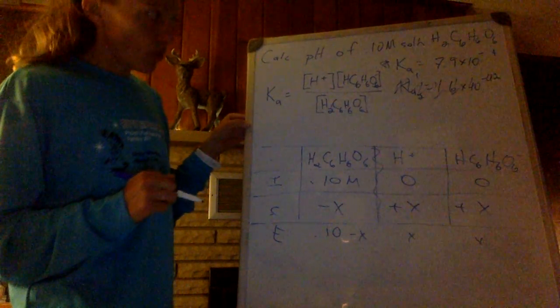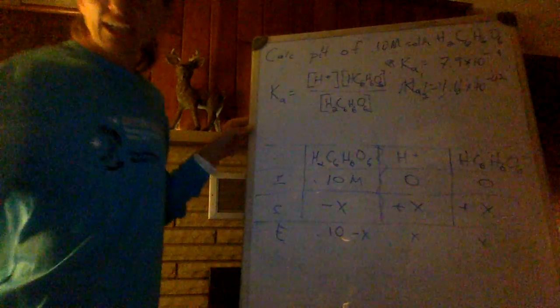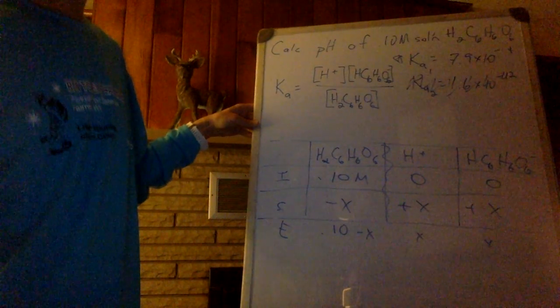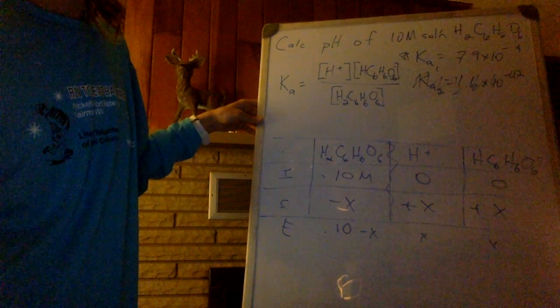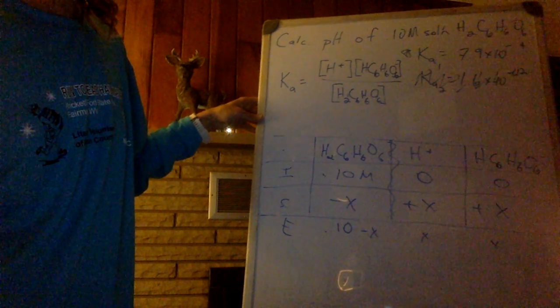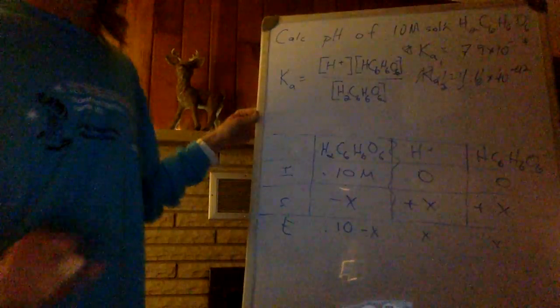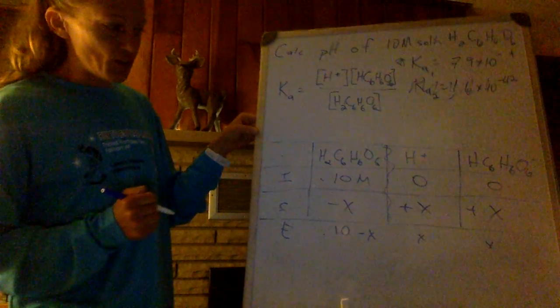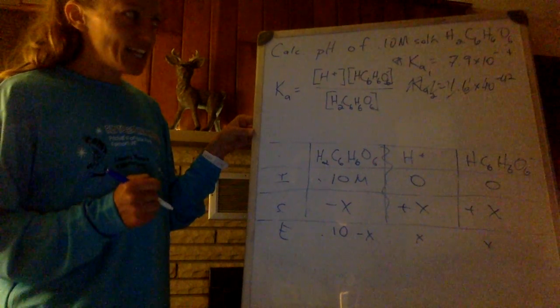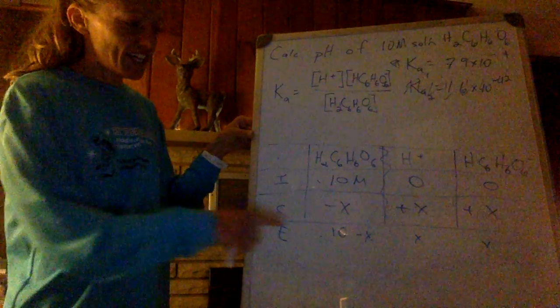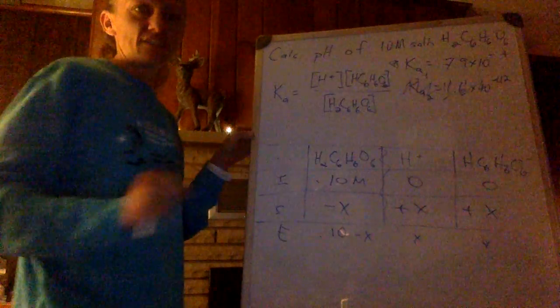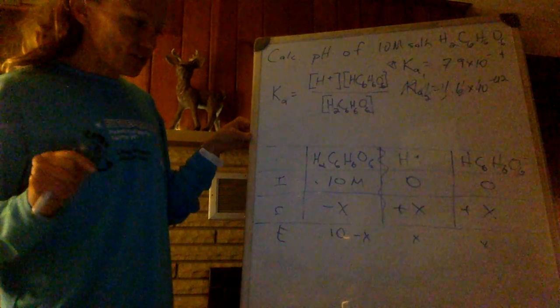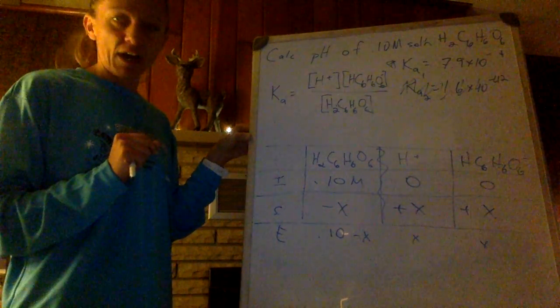So, can I ignore x? Well, if I divide 0.1 divided by 7.9 times 10 to the negative fourth, I get 126, which says no. But there's another rule that you can go to here. And if you look, and the Ka and the concentration, we can compare those as well.